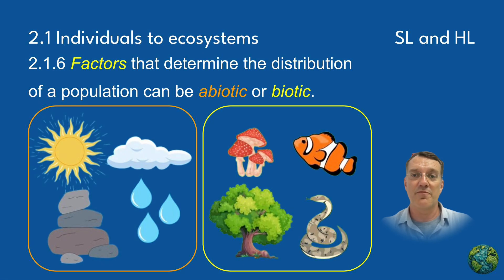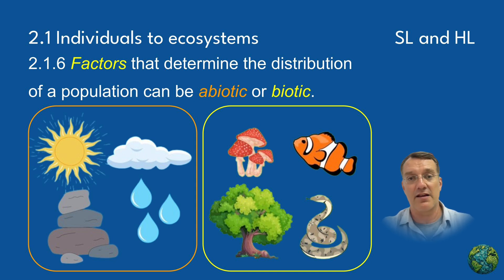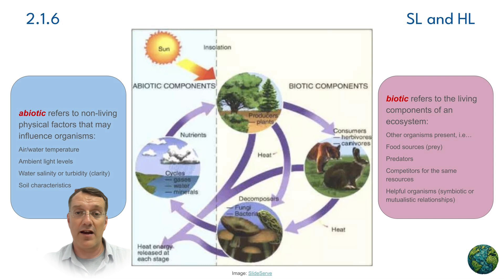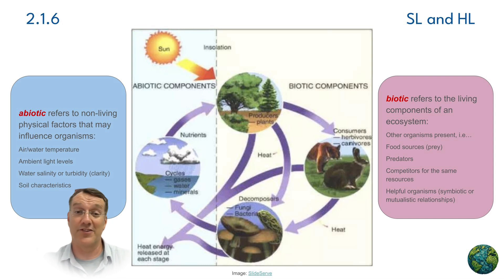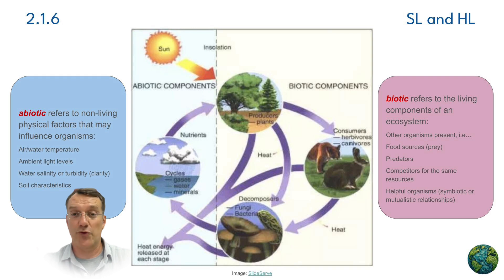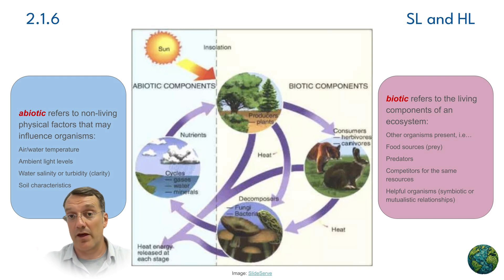The distribution of populations is influenced by both biotic and abiotic factors in the environment. Abiotic factors include physical and chemical conditions such as temperature, light, pH, and soil characteristics, while biotic factors involve interactions with other organisms.